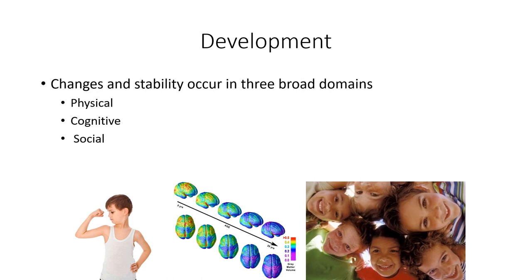We're going to look at development in three main domains: physical, cognitive, and social. There are two or three different ways to teach this class. One way is to break the semester into weeks on physical, then cognitive, then social. Another is chronologically, following a child into adolescence, adulthood, and old age. The third — and the way we'll do it — is a mix: we'll look at each phase of the lifespan and then examine physical, cognitive, and social separately within each. If you look at the syllabus, you'll see it's set up that way.